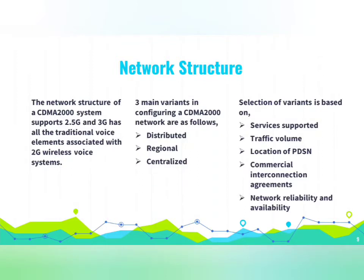The network structure for a CDMA 2000 system supporting 2.5G and 3G has all the traditional voice elements of 2G wireless voice systems. The packet network is often called the IP network. There are three main variants in configuring a CDMA 2000 network: distributed, regional, and centralized. The selection of variant is based on the service supported, traffic volume, location of PDSN, commercial interconnection agreements, and network reliability and availability.